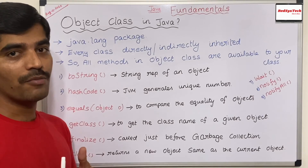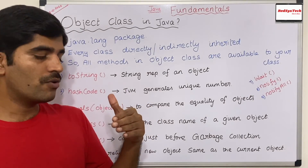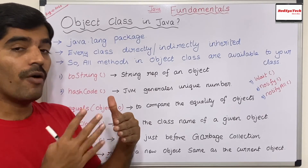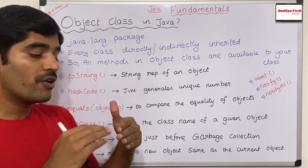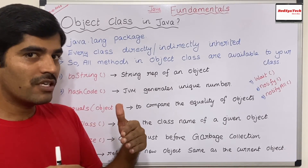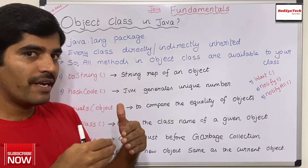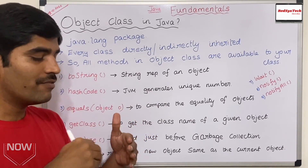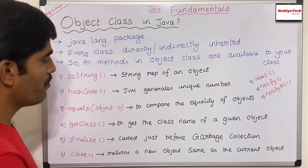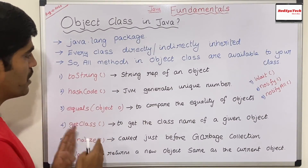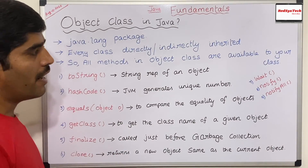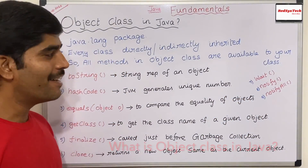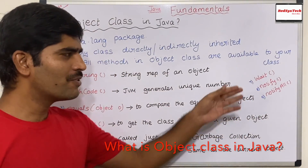The clone method actually returns a new object which is the same as the current object. Let's say I have object A and I want to clone it — meaning it creates a copy, but actually it creates a brand new object. So calling a.clone() creates another object of the same type with the same data. These are the main methods we use in our daily programming.